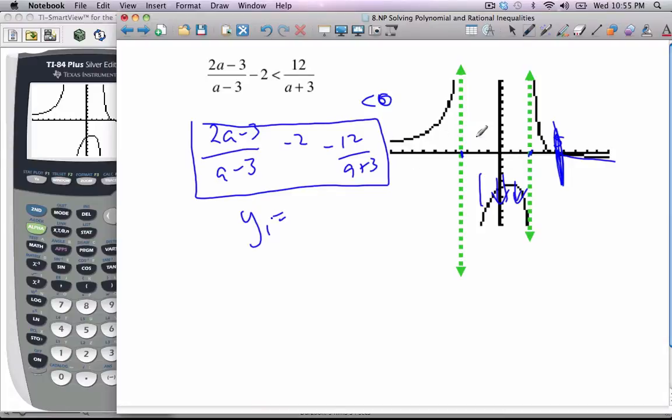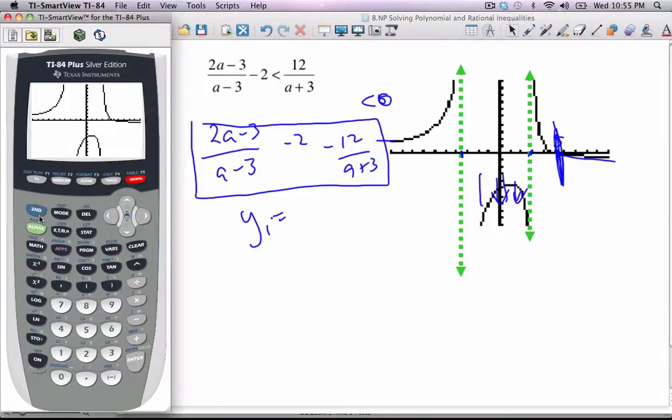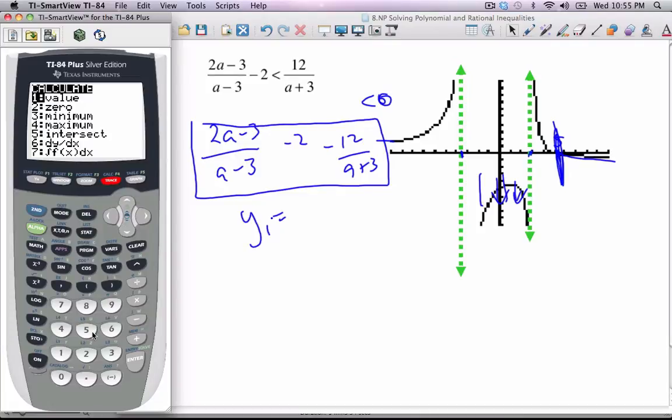This looks like it's going to be an asymptote forever, so I'm going to leave this one alone. I'm going to go to my calculator and let's calculate the intersection, or the zero rather.